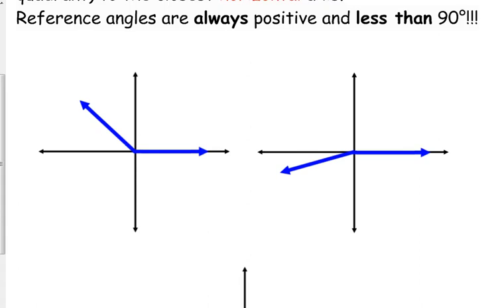We have three cases: reference angles in the second, third, and fourth quadrant. The premise is the same for all quadrants but slightly different in calculation. For an angle in the second quadrant, the angle is named based on its measure from the positive x-axis — I'll label that alpha. Its reference angle is its measure to the closest horizontal axis, which is the negative x-axis. So if we know alpha, we subtract from 180.